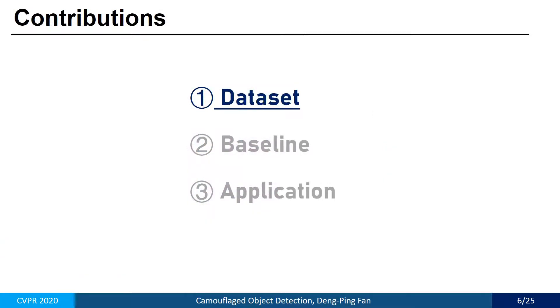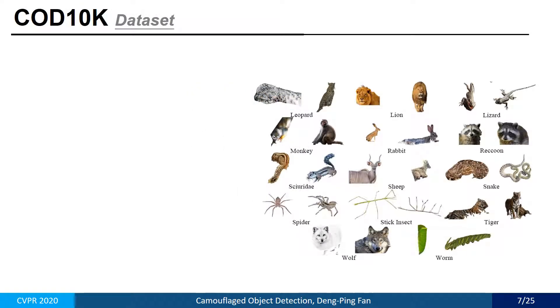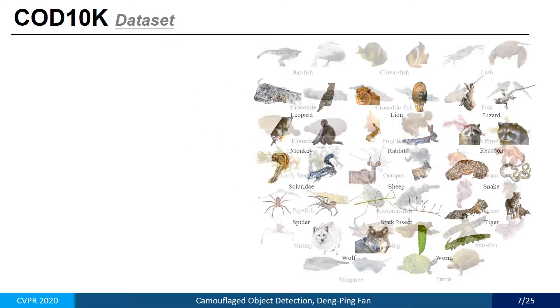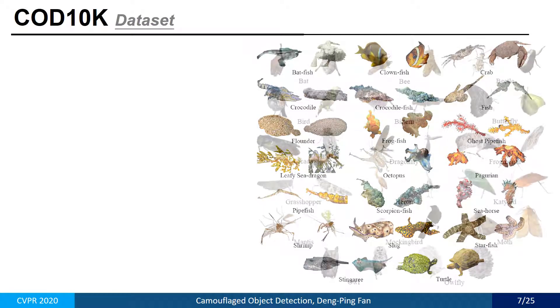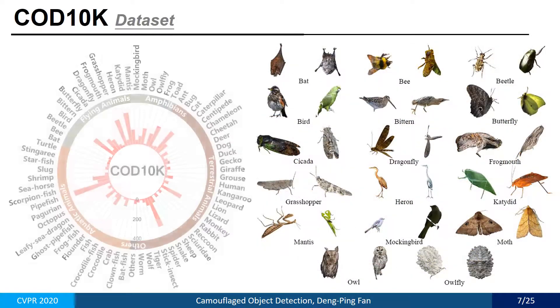The goal of this work is to provide a comprehensive study about camouflaged object detection. First, we created a large-scale COD dataset. It contains 10,000 images covering diversity categories.